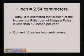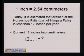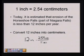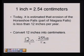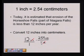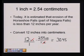In our first example, it's estimated that erosion of the Horseshoe Falls, part of Niagara Falls, is less than 12 inches per year, and I want to convert 12 inches into centimeters. I'm going to start with 12 inches and multiply by 2.54 centimeters over 1 inch. I can do this because 2.54 centimeters over 1 inch is equal to 1, so I won't change the value. The inches in the numerator cancel with inches in the denominator, and now I can multiply straight across: 12 times 2.54 equals 30.48.